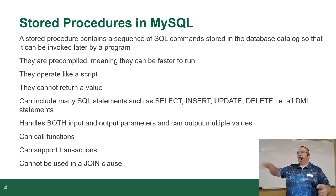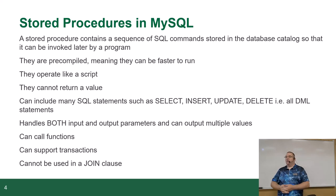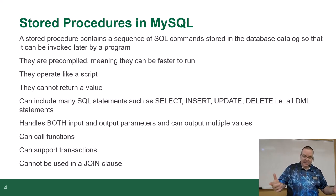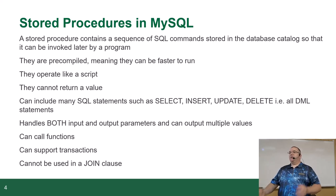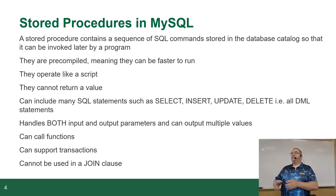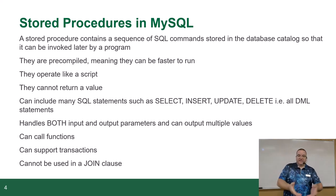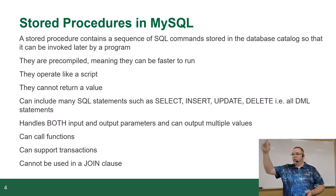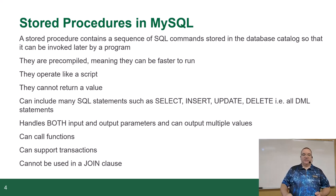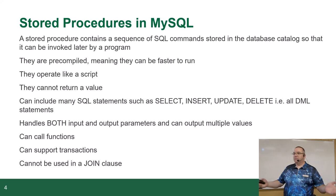You call the procedure with a series of parameters fed in, and it can return values through those parameters. In Python or PHP, when you call a function, the function returns a value at the end. In PHP you can pass a variable by reference — you pass a pointer to the variable so the function can modify values outside of its own scope. This is basically what output parameters do. The procedure also supports transactions — you can start a transaction inside it, do a bunch of things, then commit or roll back. It can't be used in a join clause because it's called, not selected.